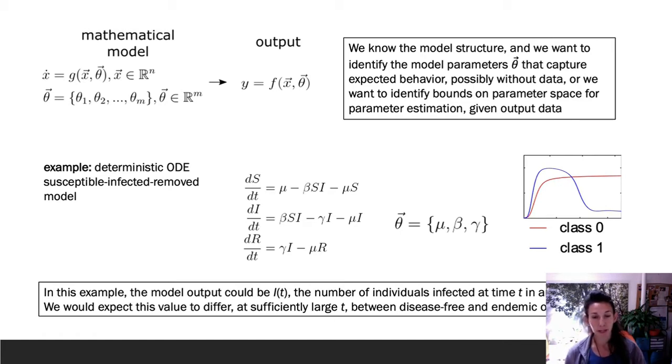I chose this as the model output because this state variable we would expect to differ at sufficiently large t between a disease-free state and an endemic state. Often in biological modeling, we want to classify outcomes: disease-free versus endemic, septic shock versus recovery, chronic inflammation versus resolution. We tend to think of things in terms of classification, and that makes it well-suited for machine learning.